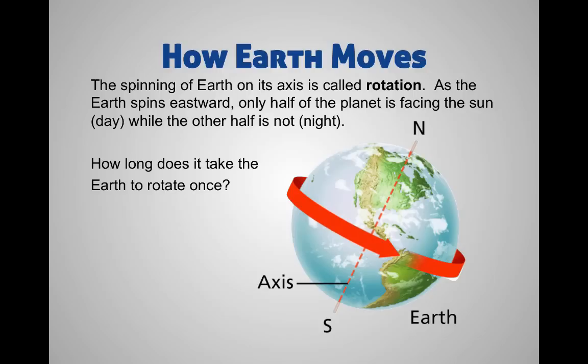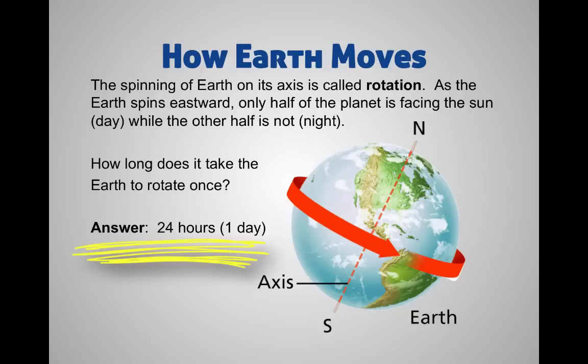Day and night is caused by rotation. And how long does it take for us to rotate once? Think of day and night. How long does that take? It's 24 hours, right? That's one day. So one spin on its axis, that is one day, one rotation.